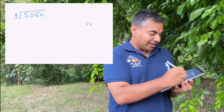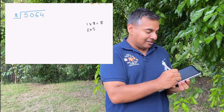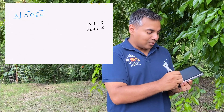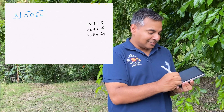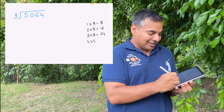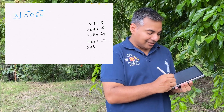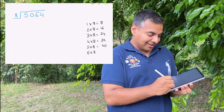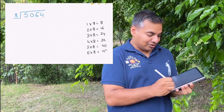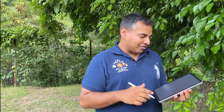We start with: one times eight equals eight, two times eight equals sixteen, three times eight equals twenty-four, four times eight equals thirty-two, five times eight equals forty, six times eight equals forty-eight, seven times eight and it goes on. It's all on the sheet that's been provided to you. So that's the first step.